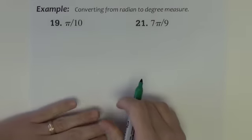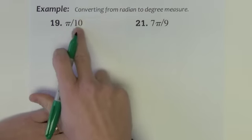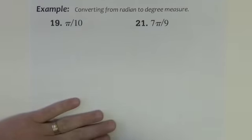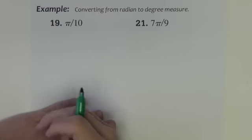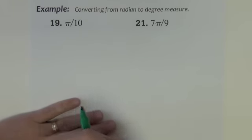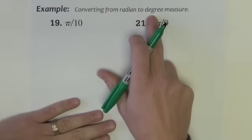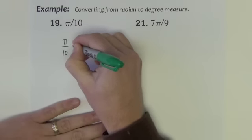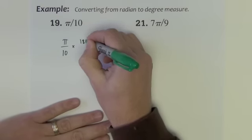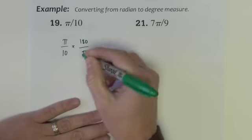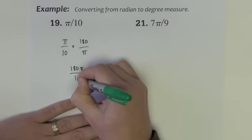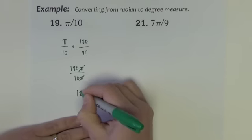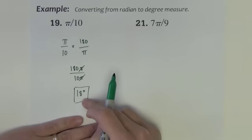Let's do a couple of examples converting from radian to degree measure. We're given a radian angle and want to know what it is in degrees. Since we're just now introduced to radians, conceptually I have no idea how big pi over 10 radians is — is it a little angle, a big angle, acute, obtuse? To get an idea of its size, we convert it to degree measure. We take pi over 10 and multiply by 180 over pi. That gives 180 pi divided by 10 pi; the pi cancels, leaving 180 divided by 10, which is 18. So pi over 10 radians equals 18 degrees.